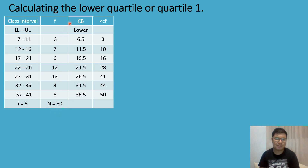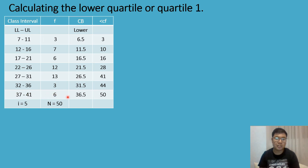Next, we get the lower class boundary by subtracting 0.5 from each lower limit: 7−0.5=6.5, 12−0.5=11.5, 17−0.5=16.5, 22−0.5=21.5, 27−0.5=26.5, 32−0.5=31.5, 37−0.5=36.5.